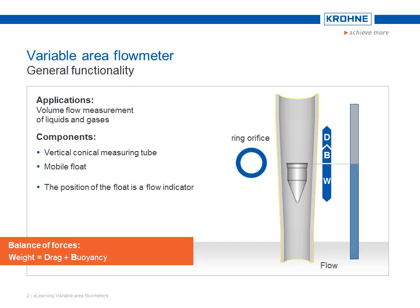The position of the float is a flow indicator. The gravitational force and the buoyancy force are constant for a specified application. Only the flow force can vary temporarily as a result of a change in flow, which moves the float into a different position.